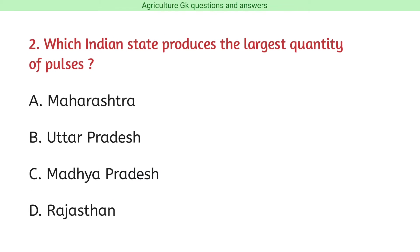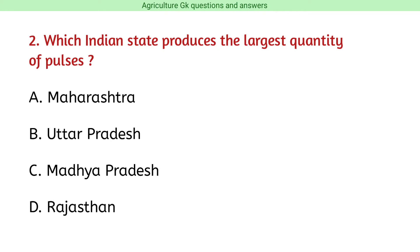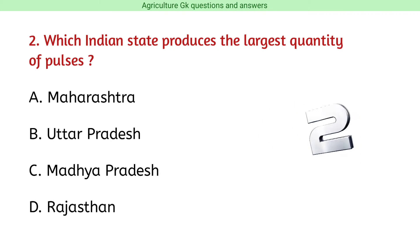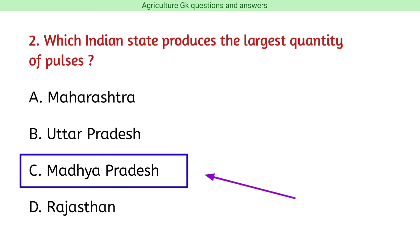Question number 2. Which Indian state produces the largest quantity of pulses? The correct answer is option C, i.e., Madhya Pradesh.